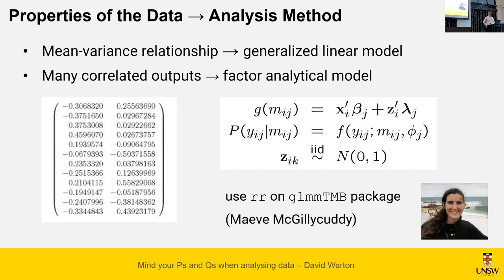Maeve is just writing up her PhD and many of you would have met her — she gave a talk about software she's been writing for the glmmTMB package, which implements this particular model. If you fit mixed models in R, lme4 is the most commonly used package; glmmTMB uses the same syntax but uses automatic differentiation to make it faster and more stable, with added bells and whistles. She's been adding what we call a reduced-rank correlation structure, so you can easily do a factor analytical model in standard mixed model syntax in R.